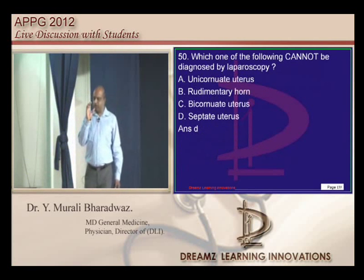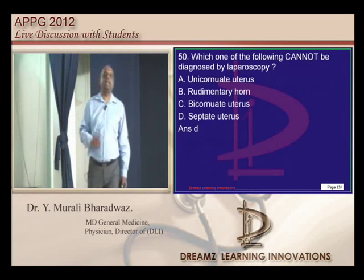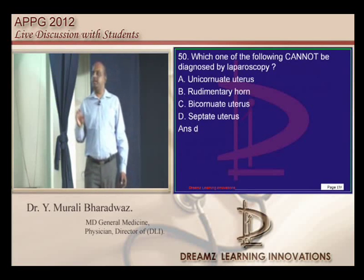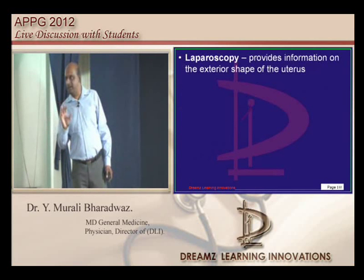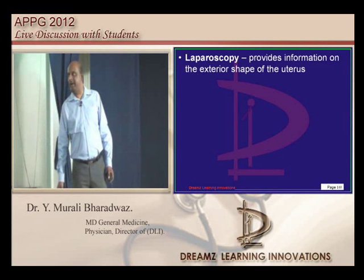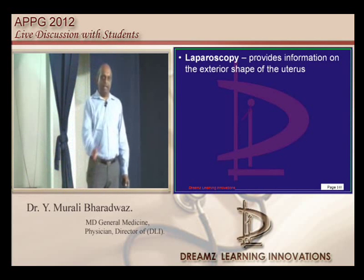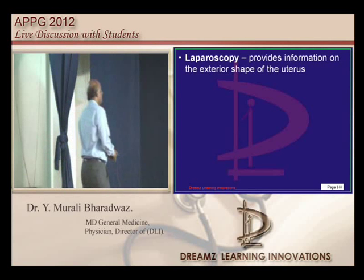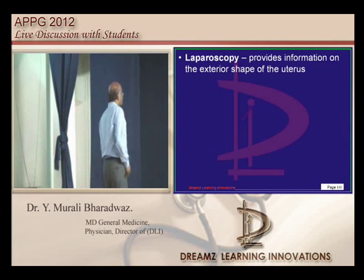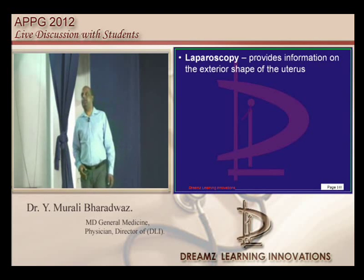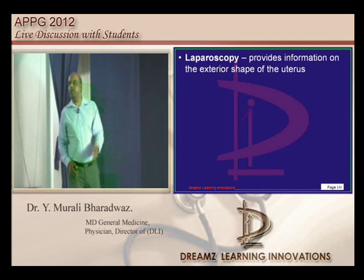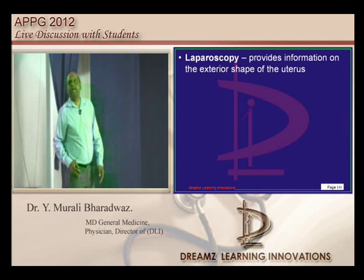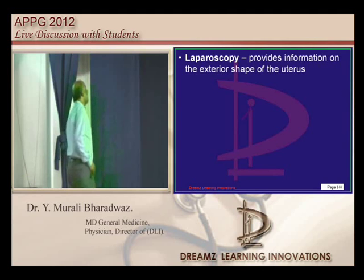What can laparoscopy see through that keyhole? You can see the exterior surface of the uterus, not the interior surface. Septate uterus involves the interior of the uterus, not the exterior. Whereas bicornuate uterus, rudimentary horn, and unicornuate uterus — these all have an outside appearance that can be diagnosed using laparoscopy.